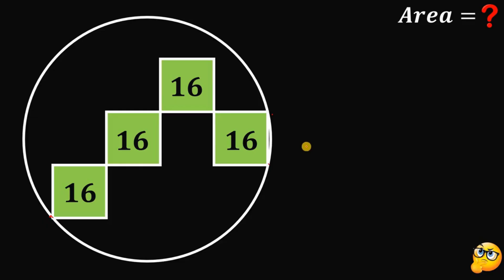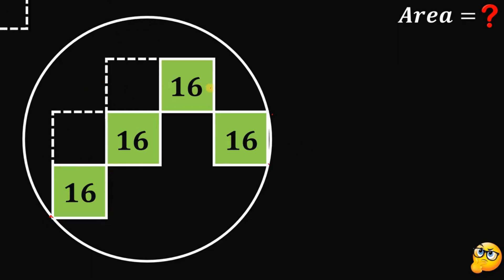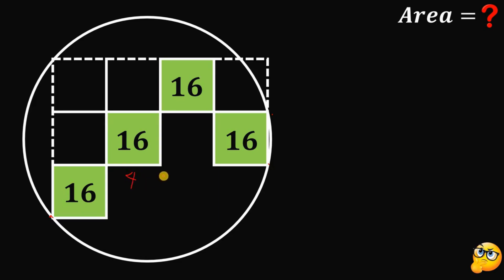To answer this question, we need four squares. Here they are: the first one, the second, the third, and the fourth square. Since the area of each square is 16 square units, it follows that the side length of the square must be equal to 4 units. So this side is 4, this is 4, and this is also 4.